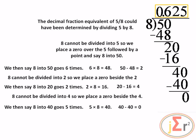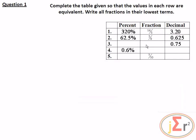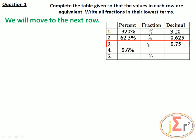Students doing PEP should have the decimal representations of common fractions — eighths, fourths, halves, fifths — at their fingertips. A student should be able to write the decimal representation of 5/8 as 0.625 immediately without performing long division. We will now move to the next row, which contains only a decimal fraction.